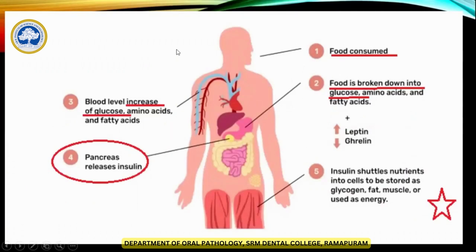This is the basic diagram about diabetes — how insulin plays a role. Food is consumed and broken down into glucose, amino acids, and fatty acids. When it goes into the blood, there is an increase in blood sugar, amino acids, and fatty acids. That is regulated by the pancreas by releasing insulin. Insulin regulates the amount of glucose in the body and keeps it at a normal level.